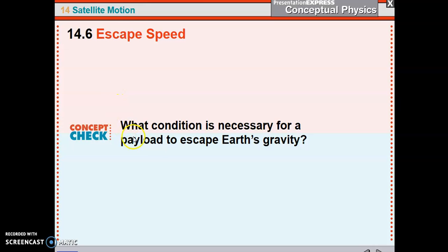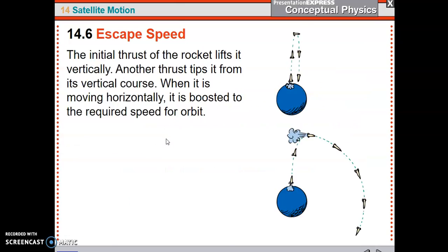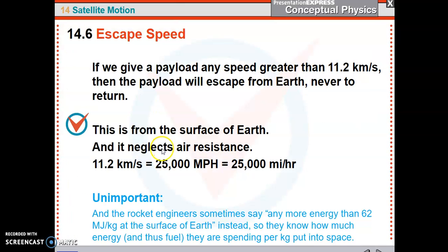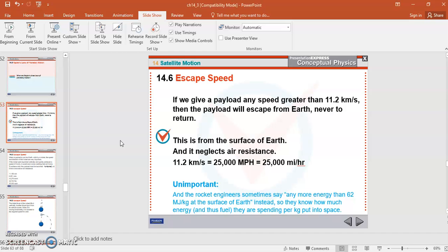Okay. That's the end of escape speed. So here's what you need to know. What condition is necessary for a payload to escape Earth's gravity? There it is. It has to have an escape speed greater than 11.2 kilometers per second, also known as 25,000 miles per hour. So that's that. There are some homework questions. Pretty short and sweet. Good luck. Thank you very much. Bye-bye.